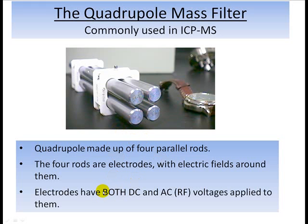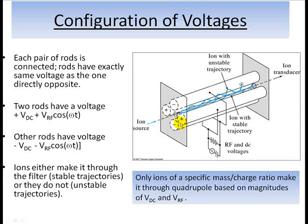Now, these voltages are complicated in the sense that they have two components. So each rod has on it a direct constant and alternating portions of voltage. Now let's get a little more specific about these voltages. Each pair of rods is connected. Any rod has the exact same sort of voltage profile.